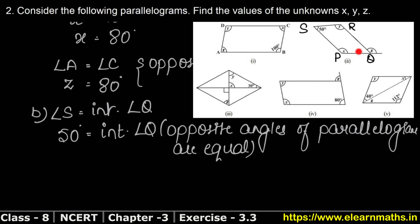Now we need to find the interior angle. Angles S and P are adjacent angles. Adjacent angles in a parallelogram are supplementary, so we can say angle P plus angle S equals 180 degrees.